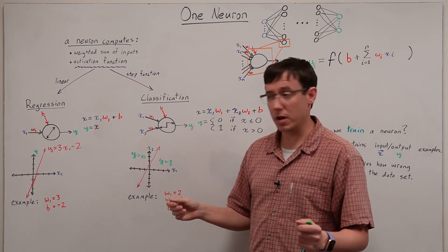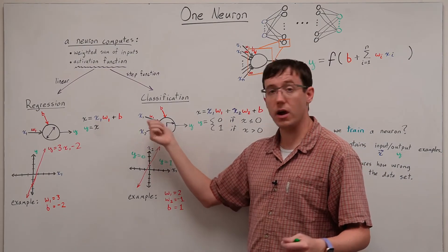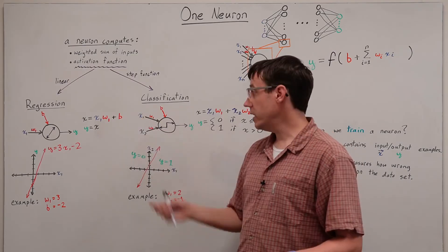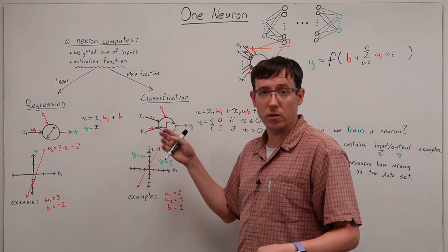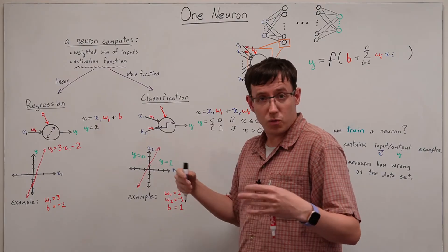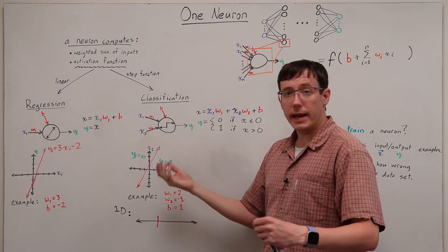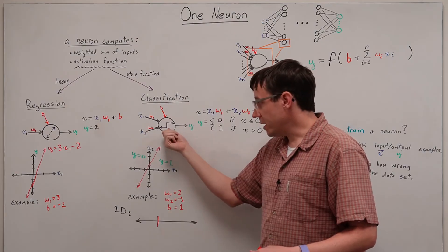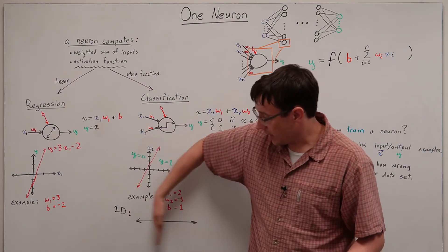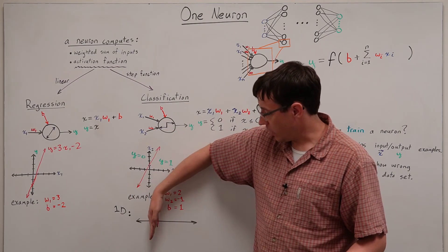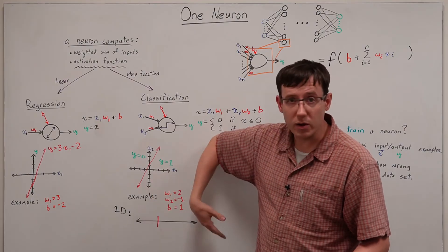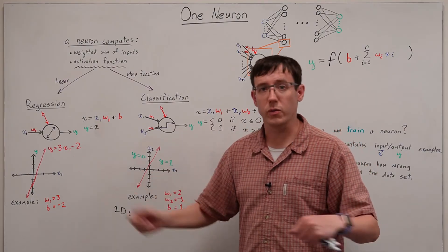And once again, we can think about cases where the neuron has other numbers of inputs. If we had only one input here, then we could represent that single dimension with a line. And our function would be specifying some classification boundary where on one side we output 0 and on the other side we output 1.